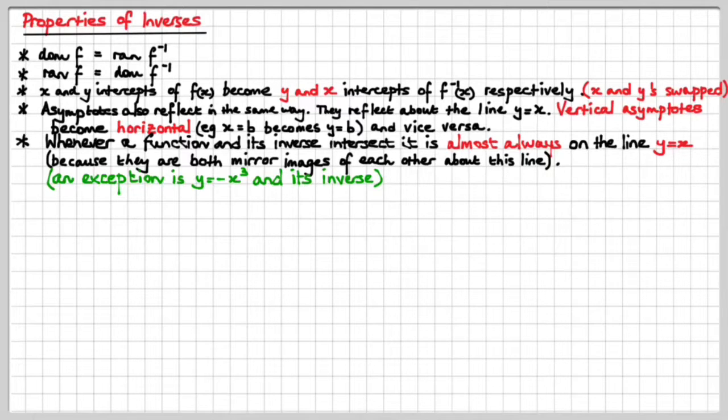Whenever a function and its inverse intersect, it is almost always an intersection on the line y equals x. This is because both functions are mirror images of each other about the line y equals x. So if they cross over the line y equals x, then the other one will come to meet it and cross over at exactly the same point.